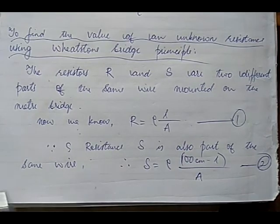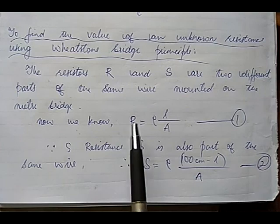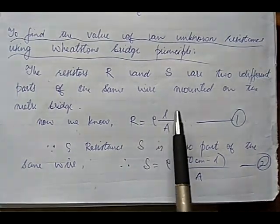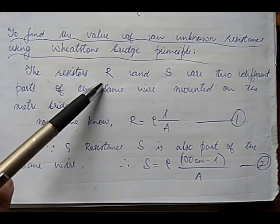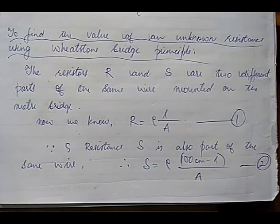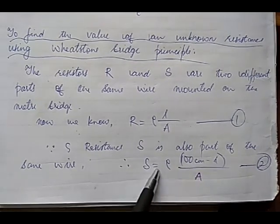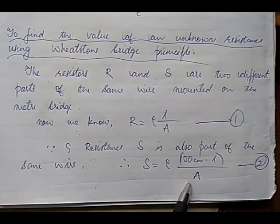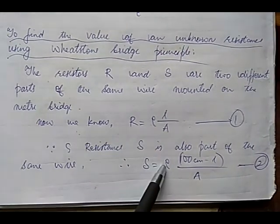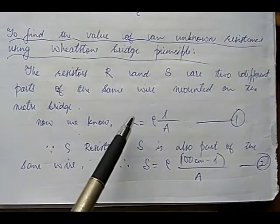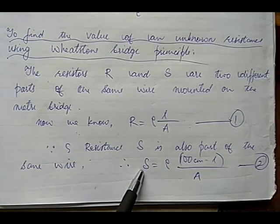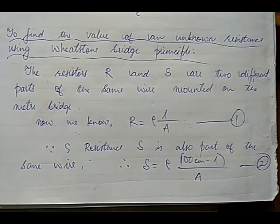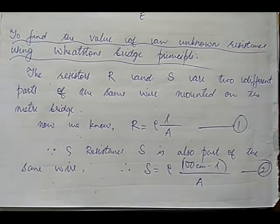R and S are two different parts of the same wire on the meter bridge. For any resistance, R equals ρl/A, where ρ is the specific resistance, l is the length, and A is the cross-sectional area. Since R and S are parts of the same wire, resistance of S equals ρ(100 − l)/A. R and S share the same ρ and A, so if R has length l then S has length 100 − l centimeters, since R plus S equals 100 centimeters.